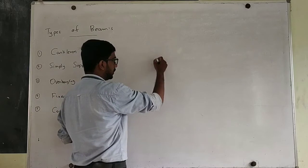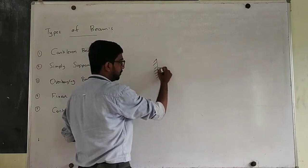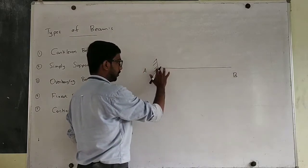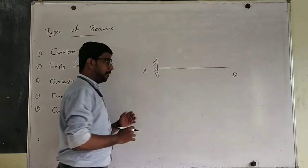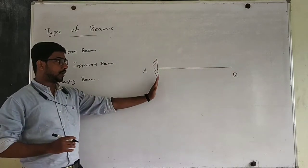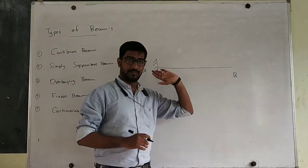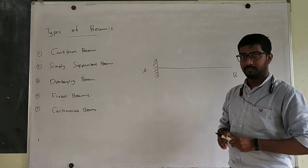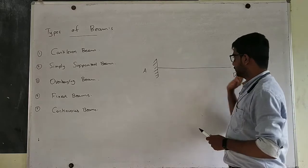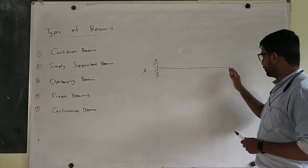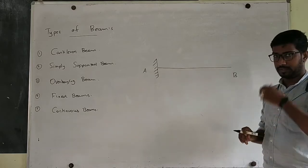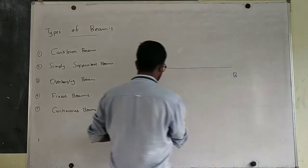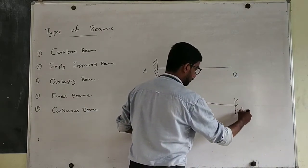A beam which is fixed at one end and free at the other end — this type of beam is called a cantilever beam. If you see capital A, capital A will be fixed. You have a fixed support. You have to show that it goes to a fixed support.